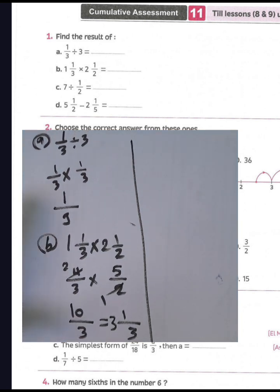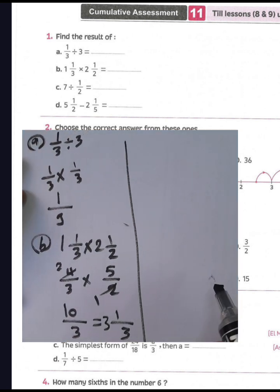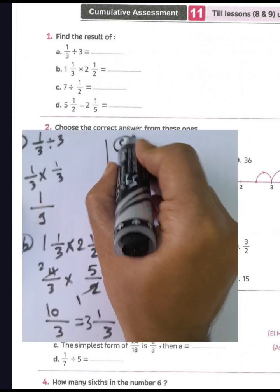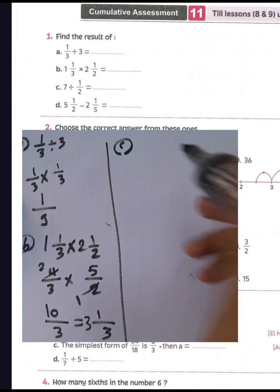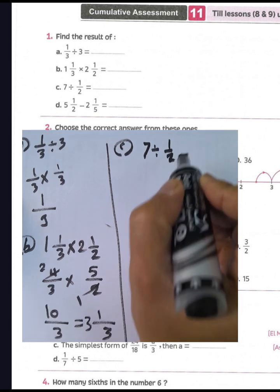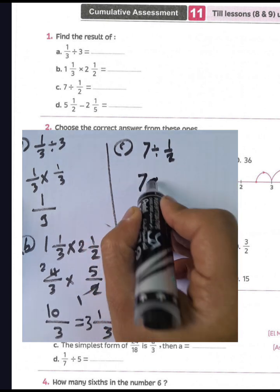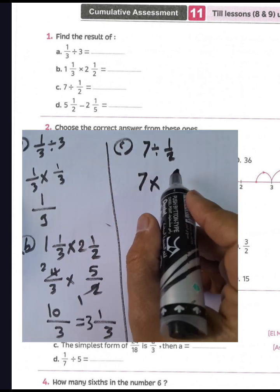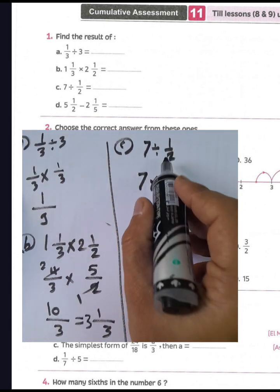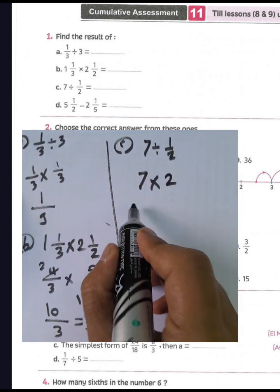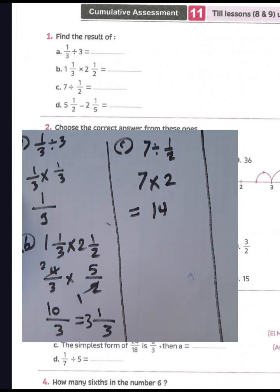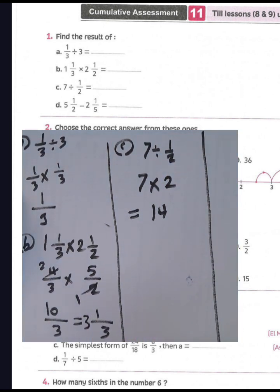Letter C: seven divided by one over two. Convert from division to multiplication and take the inverse of one-half, which is two. Two times seven equals fourteen, so the result is fourteen.